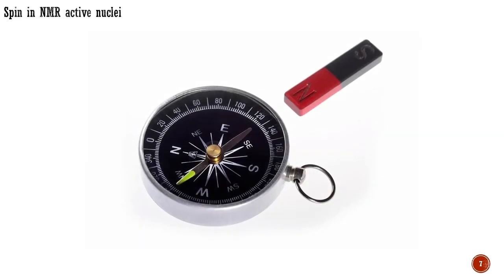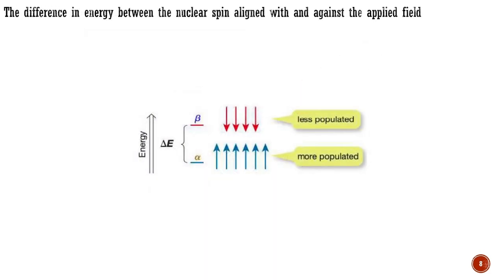Let us return to the compass for a moment. If you want to move a compass needle away from pointing north, you must push it and expend energy. If you put the compass next to a bar magnet, the attraction towards the magnet is much greater than the attraction towards the north pole, and the needle will now point at the magnet. Exactly how hard it is to turn the compass needle depends on how strong the magnetic field is and how well it is magnetized. Likewise, for a nucleus in a magnetic field, the difference in energy between the nuclear spin aligned with and against the applied field depends on the magnetic field strength and the magnetic properties of the nucleus. The stronger the magnetic field, the greater the energy difference between the two alignments.